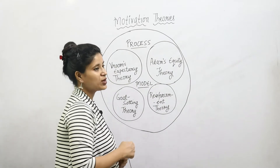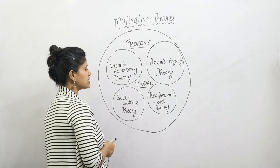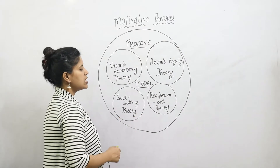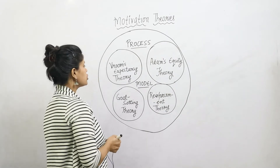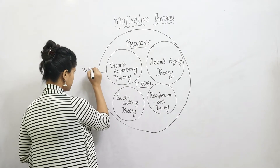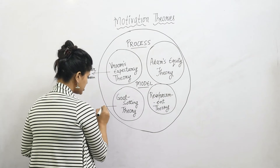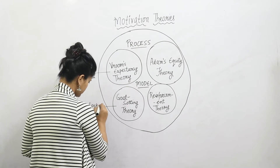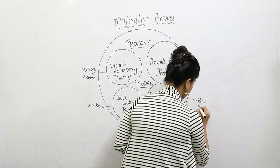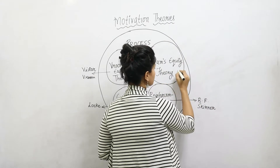Today we are going to study four models and theories from motivation. First is Vroom's Expectancy Theory, given by Victor Vroom. Second is Adams' Equity Theory. Third is Goal Setting Theory, given by Locke. And fourth is Reinforcement Theory, given by B.F. Skinner. The equity theory is given by John Stacey Adams.